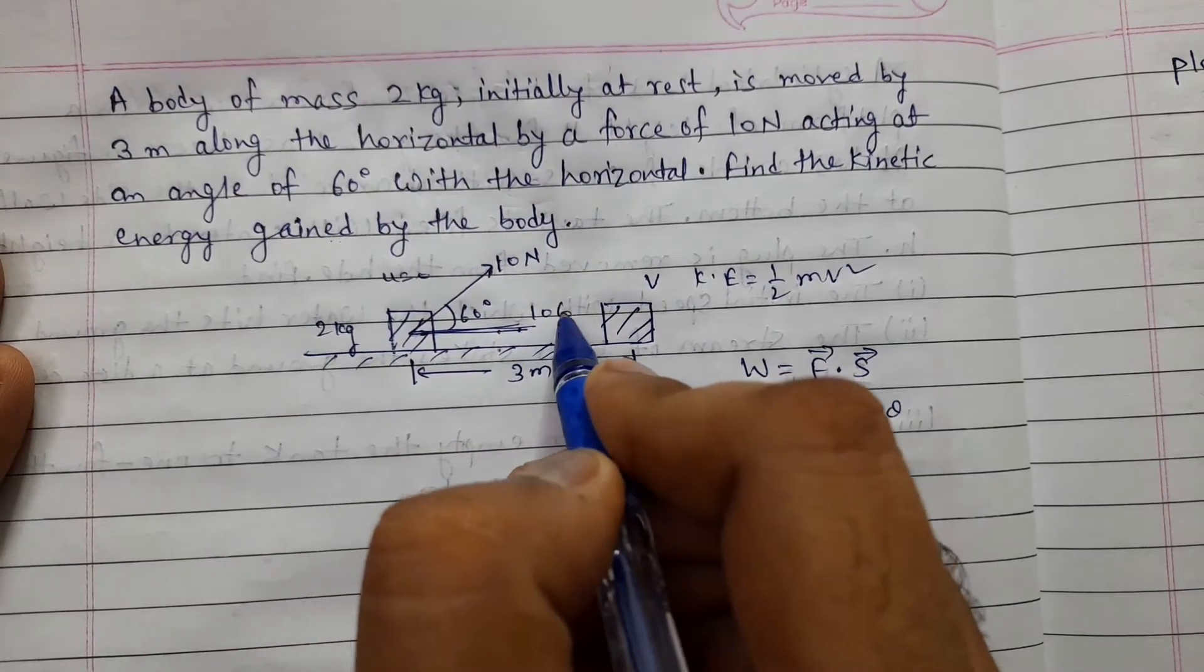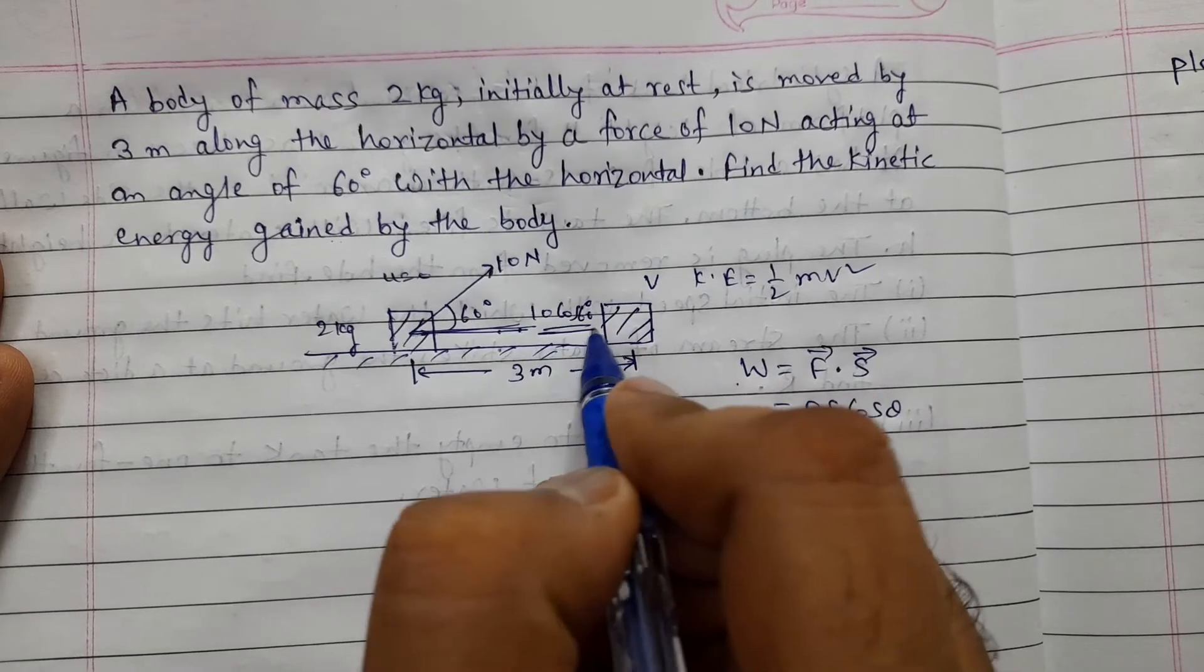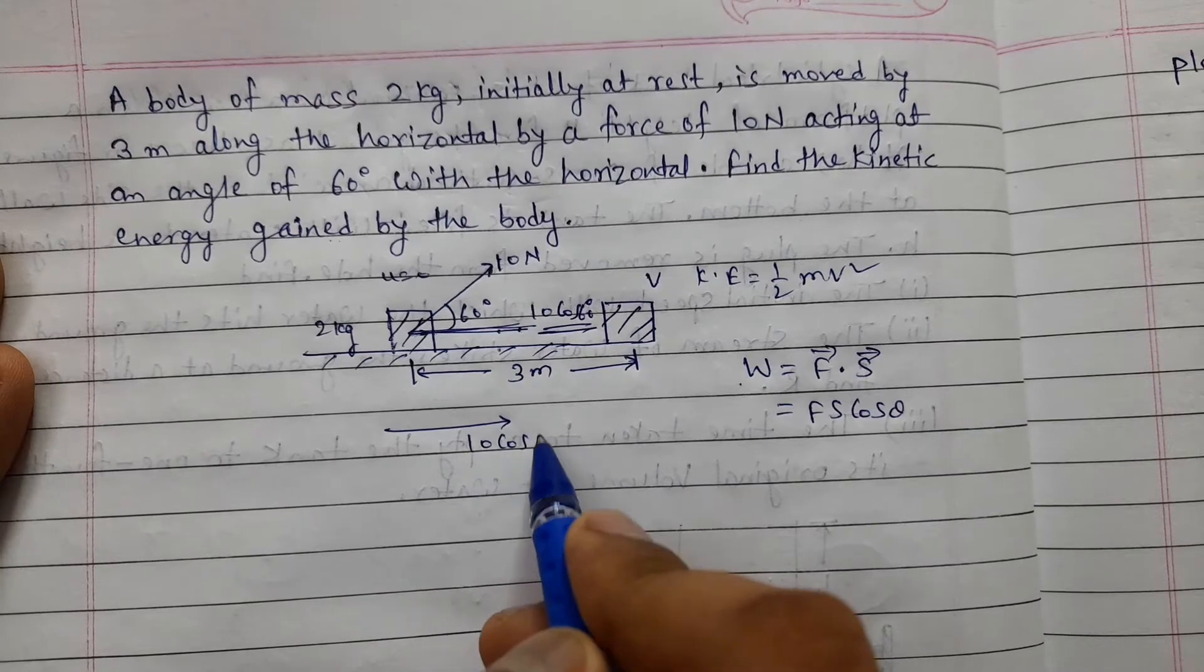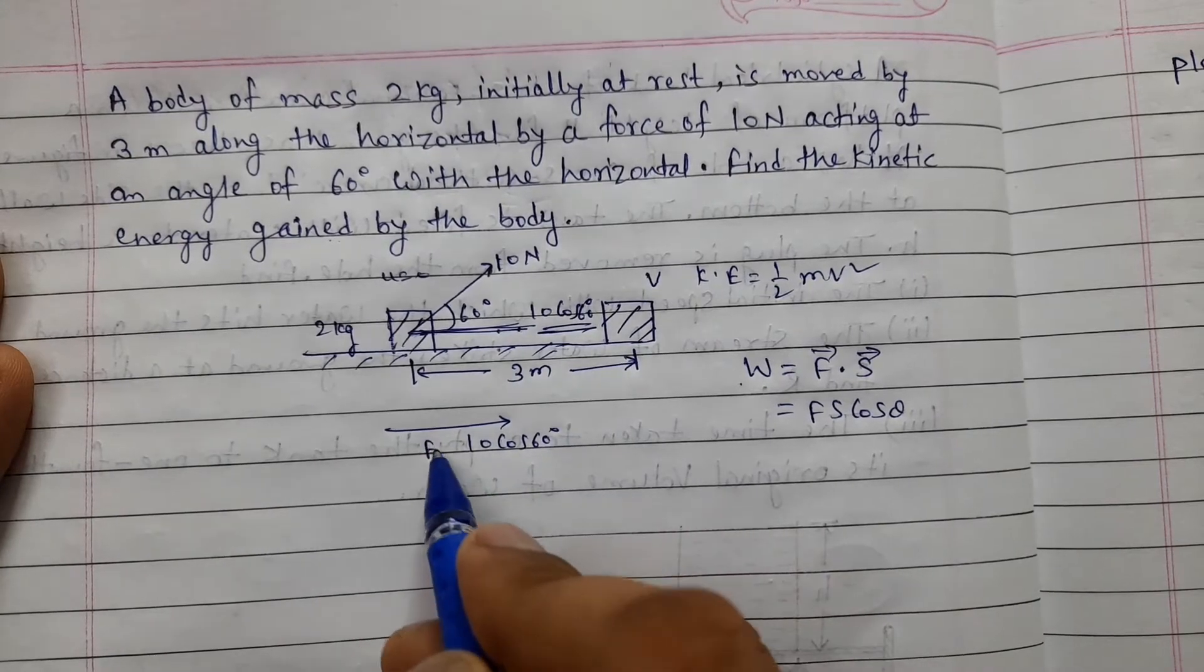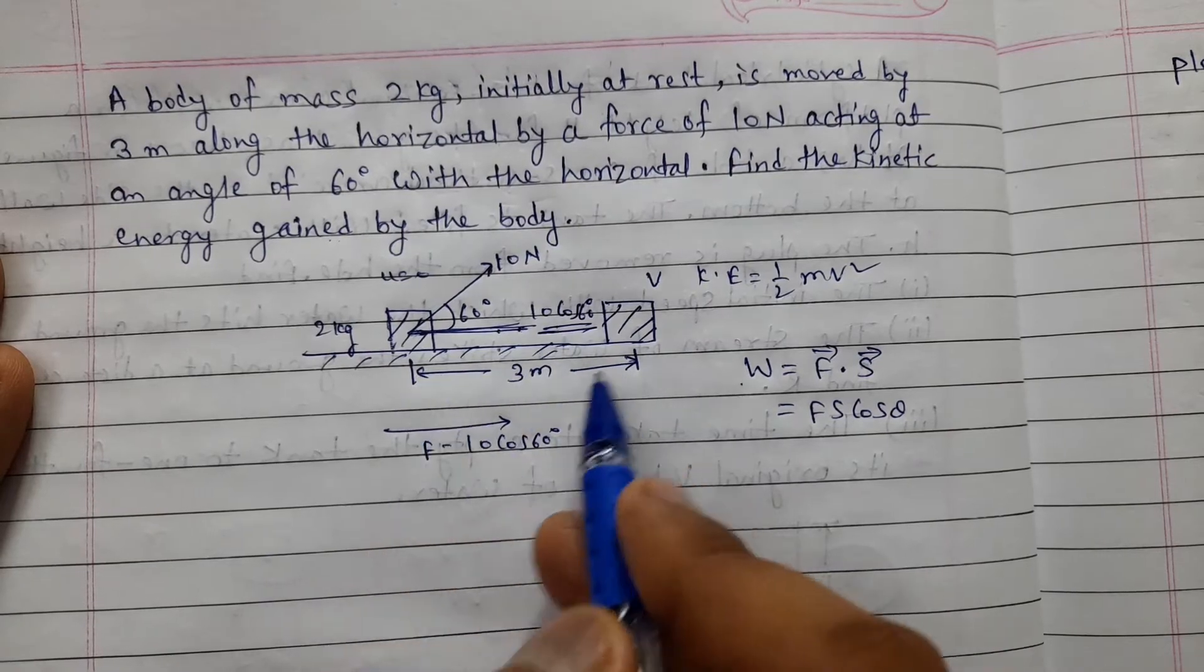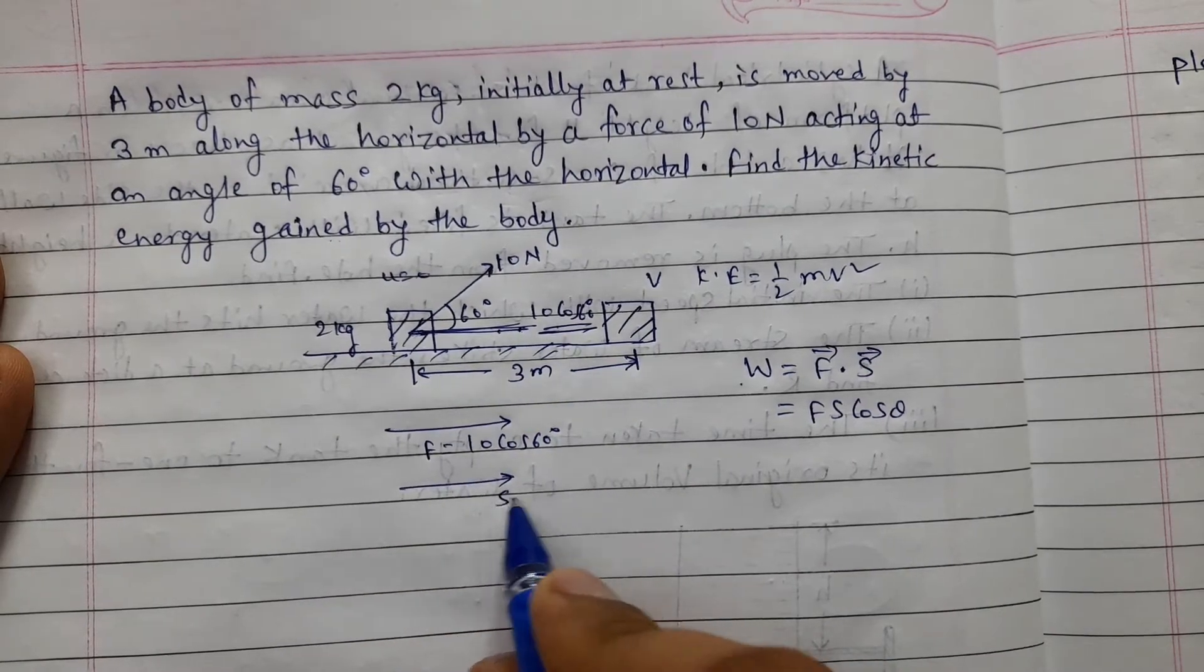This component will be 10 cos 60 degrees. Because we have force in this direction, displacement is how much? Displacement is 3 m.